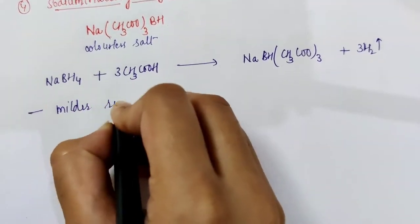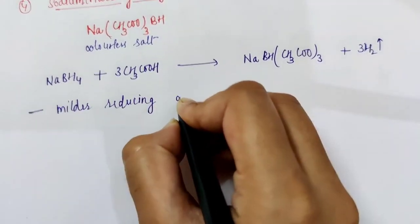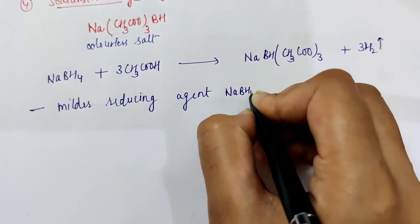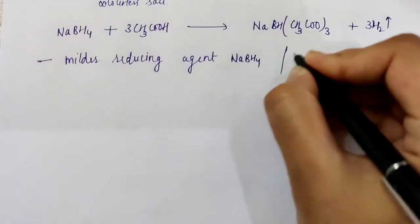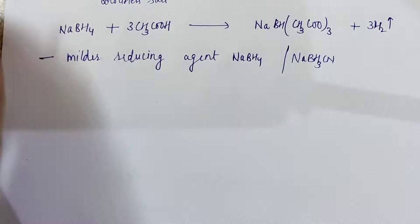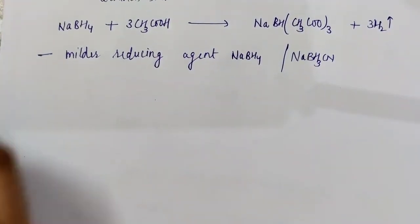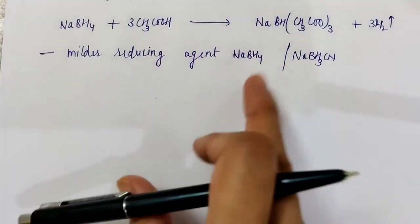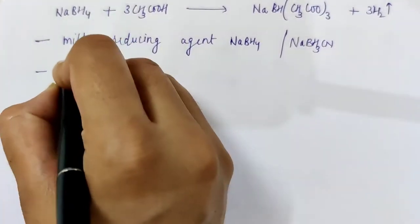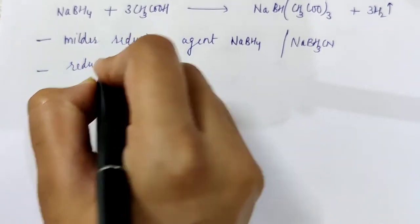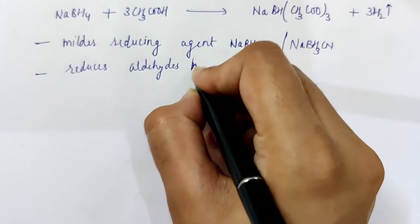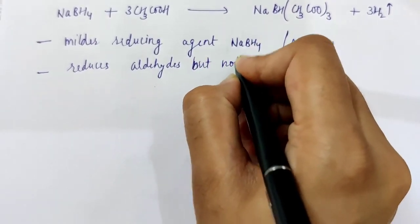If we compare it with sodium borohydride or sodium cyanoborohydride, compared to these two reducing agents, it is a milder reducing agent. It reduces all the aldehydes but not all the ketones.